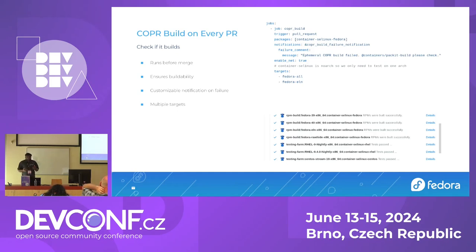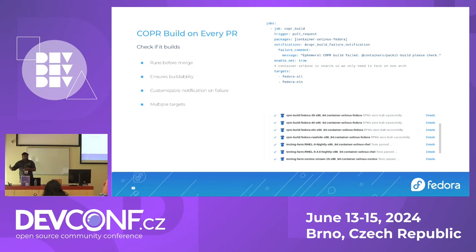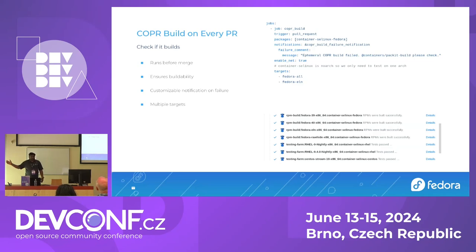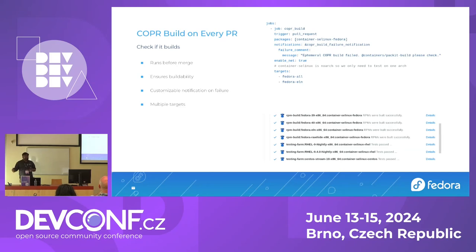If you want a Copr build to happen on every upstream PR, you specify the job copr_build with the trigger set to pull_request, and specify what packages to run it on. Targets is an important field — you can specify fedora_all, which runs against all active Fedora releases, so you don't have to worry about release mapping. This Copr build is ephemeral, so Packit takes care of it and you just see whether it's buildable and whether tests are passing.